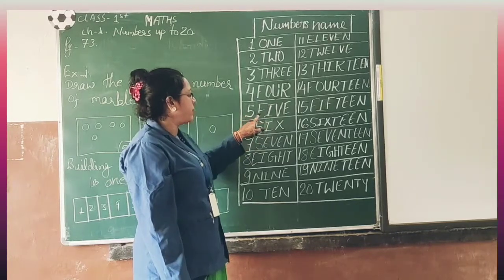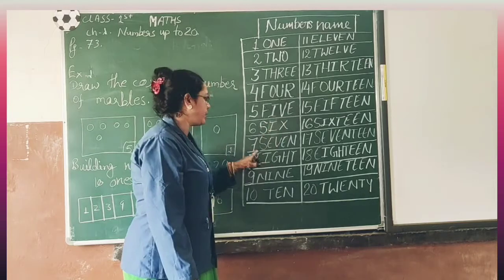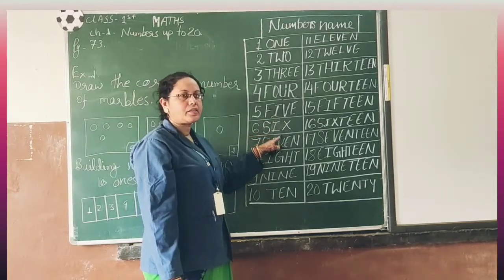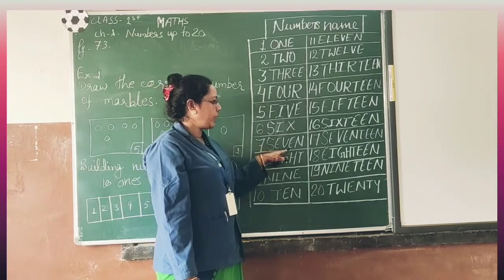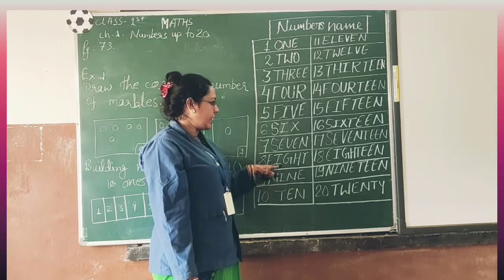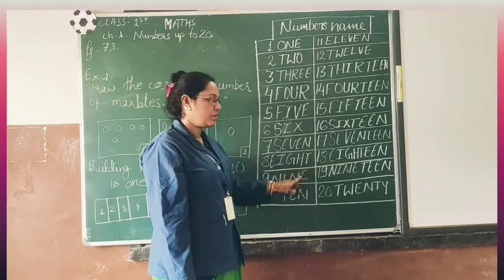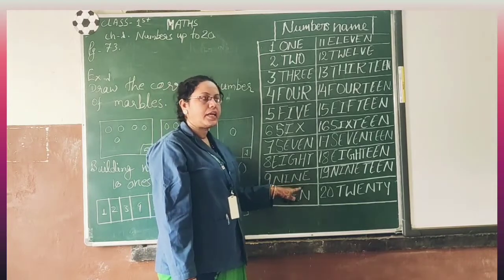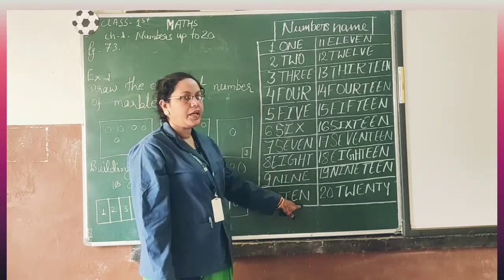5: S, I, V, E — five. 6: S, I, X — six. 7: S, E, V, E, N — seven. 8: E, I, G, H, T — eight. 9: N, I, N, E — nine. 10: T, E, N — ten.